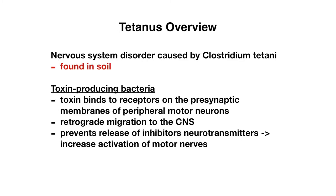Let's now switch over to tetanus. As with rabies, tetanus is a nervous system disorder caused by Clostridium tetani, which is often found in the soil. It is a toxin-producing bacteria that produces a toxin binding to receptors on the presynaptic membranes of peripheral motor neurons, allowing for retrograde migration to the CNS. The toxin then prevents release of inhibitory neurotransmitters, resulting in increased activation of motor nerves and increased muscle spasms, which is what we see with tetanus.